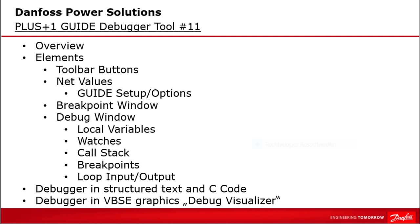I'll show the tool elements like toolbar buttons to start, stop and step through the debugging mode, the net values which are only displayed during a debugger tool session, the breakpoint window to set and activate breakpoints inside the drawing area, and the debugging window with six debugger panes: local variables, watches, call stack, breakpoints, and loop input and output. At the end we will look at how the debugger reacts in text-based languages like structured text and C code, and for display-specific applications using the debug visualizer as well.